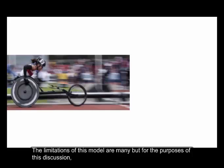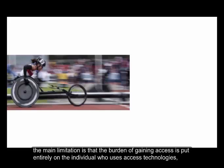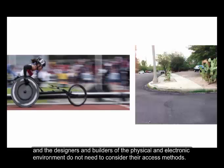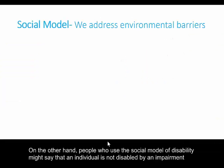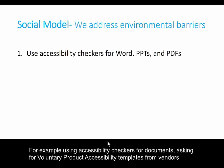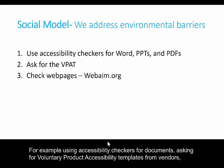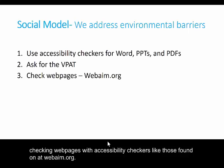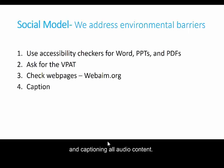The limitations of this model are many, but for the purposes of this discussion, the main limitation is that the burden of gaining access is put entirely on the individual who uses access technologies, and the designers and builders of the physical and electronic environment don't need to consider their access methods. On the other hand, people who use the social model of disability might say that an individual is not disabled by an impairment, but disabled by decisions made by people who design the environment, and therefore it is the responsibility of the designers to design a barrier-free environment — for example, by using accessibility checkers for documents, asking for voluntary product accessibility templates (VPATs) from vendors, checking web pages with accessibility checkers like those found on WebAIM.org, and captioning all audio content.